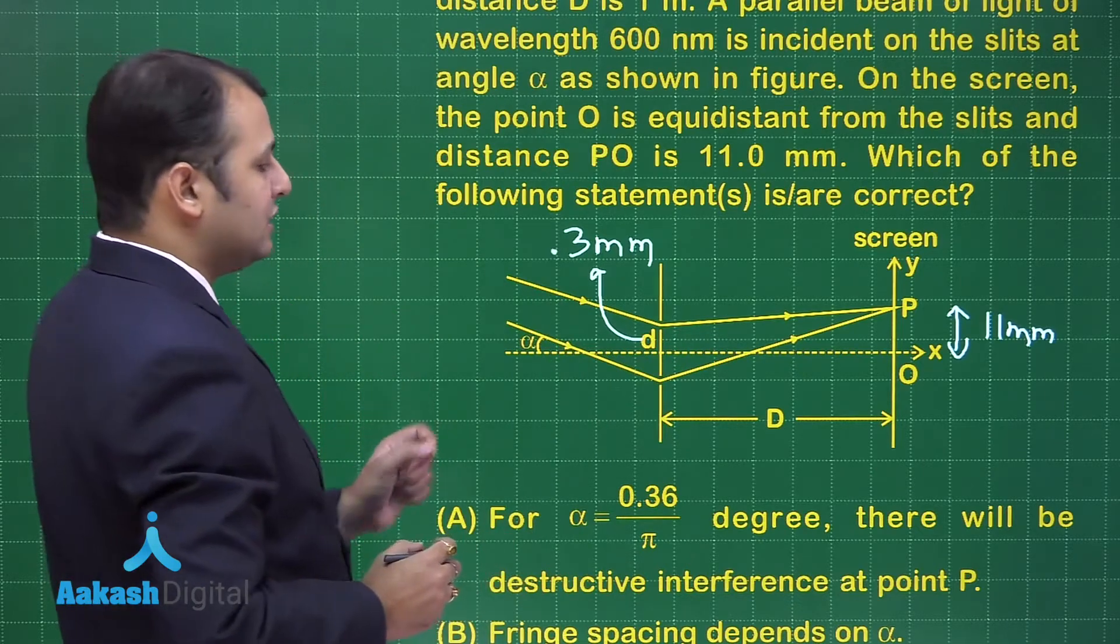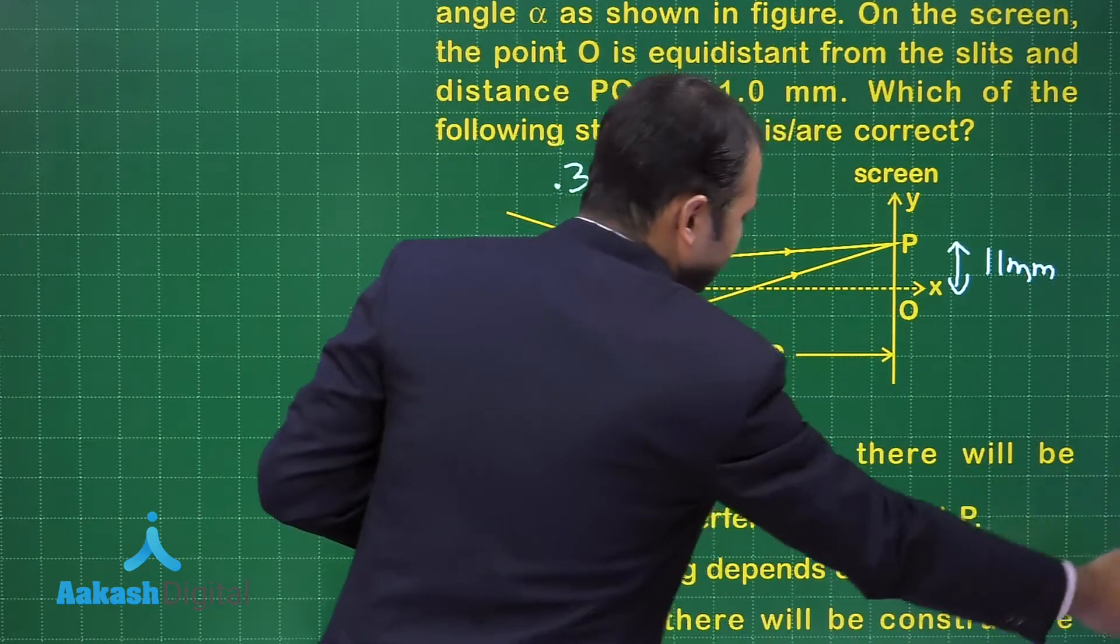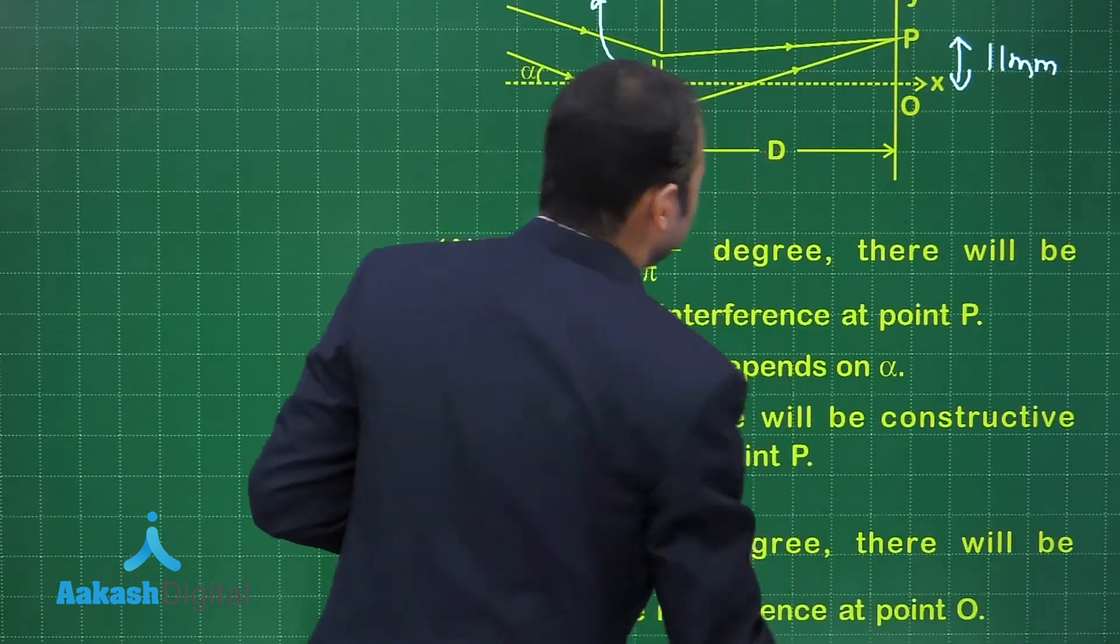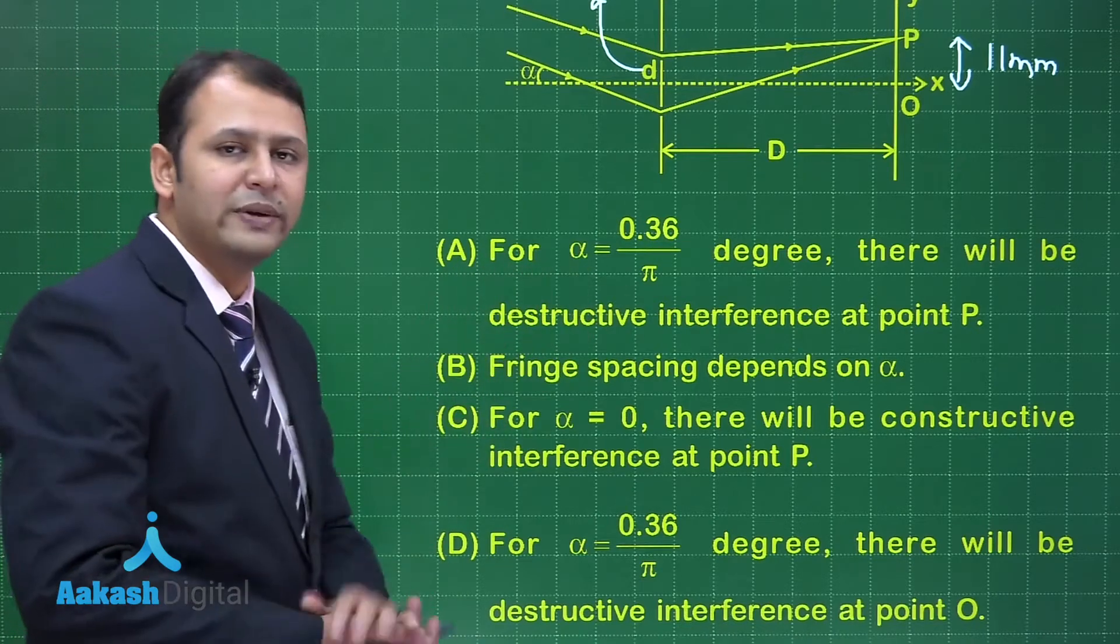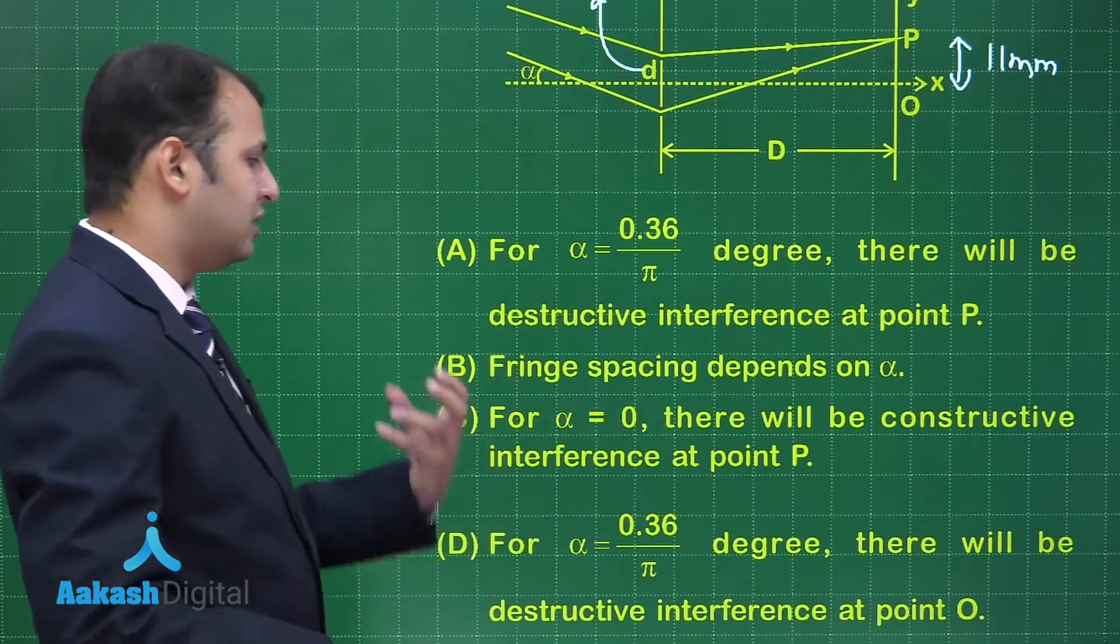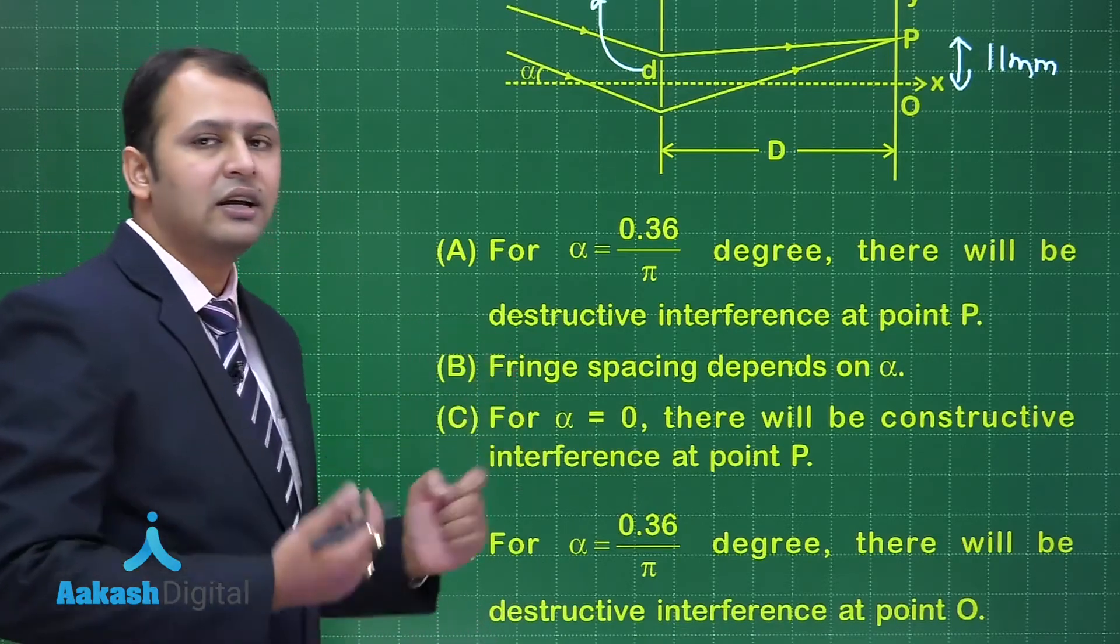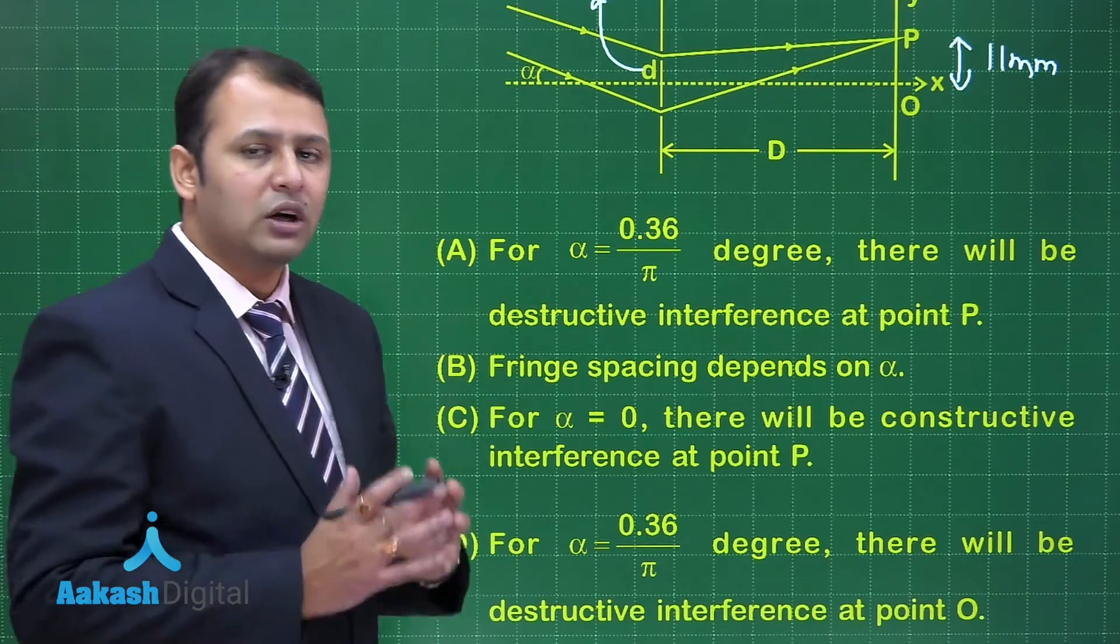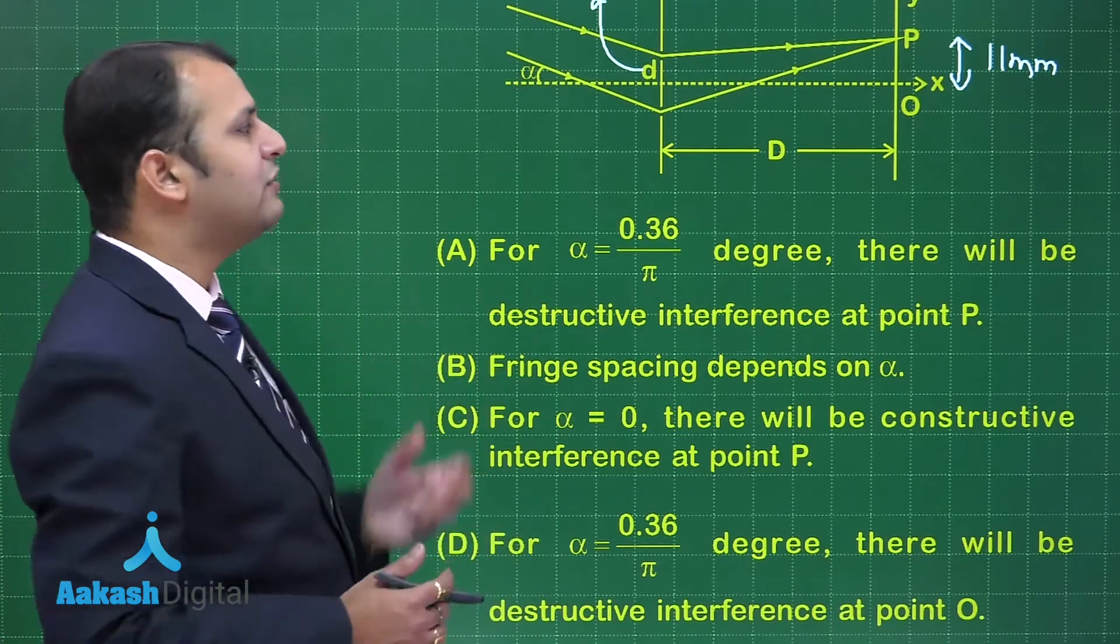The most important point is to calculate which option is correct. The options tell us if alpha is this, destructive interference will be at point P, or if alpha is 0, what will be the destructive or constructive interference at P. Basically we need to understand under what condition what interference will happen - destructive or constructive. Let's take the very first instance.